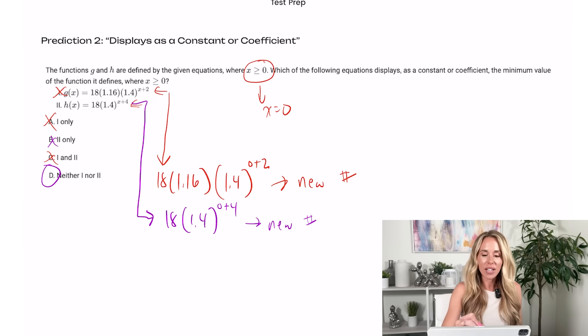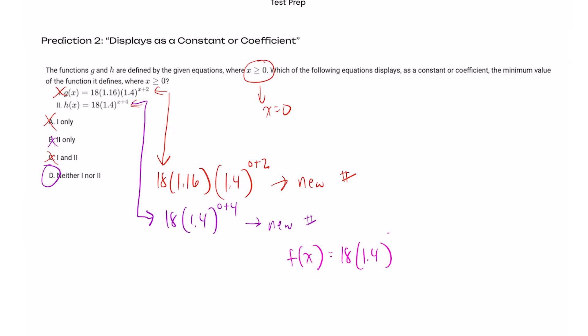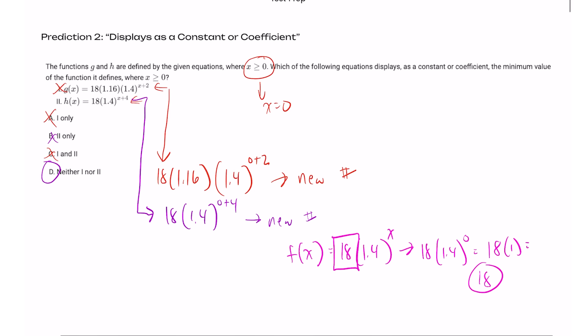This is what would happen if the answer was right. Let me just show you an answer that would work. If they said the function f of x equals 18 times 1.4 to the x, that would work because if you put in zero for x, you have 18 times 1.4 to the zero, which gets you basically 18 times 1 or 18. So that's a number that was originally visible as a coefficient in the problem. So if that was one of your Roman numerals, you would pick that one.